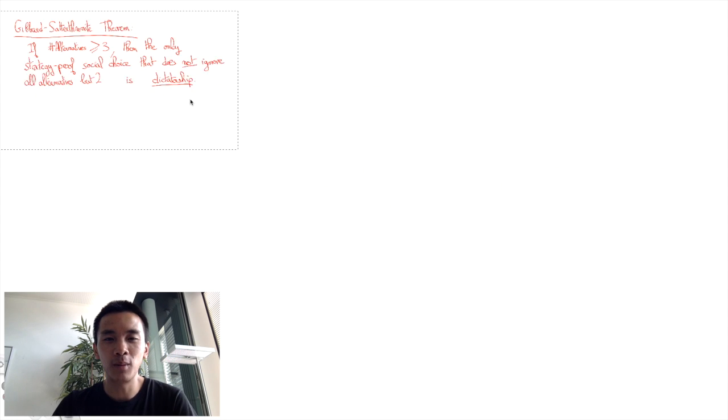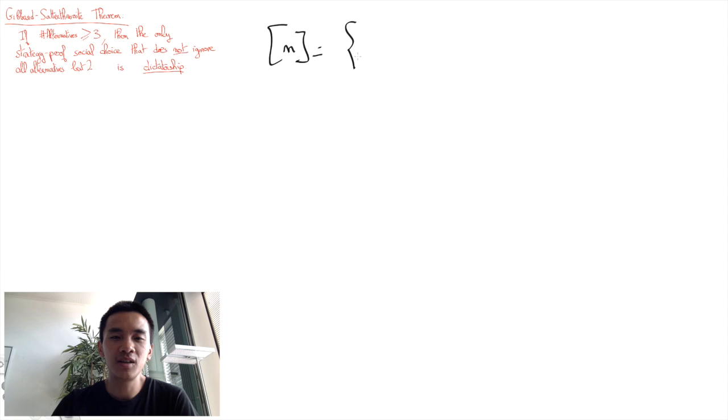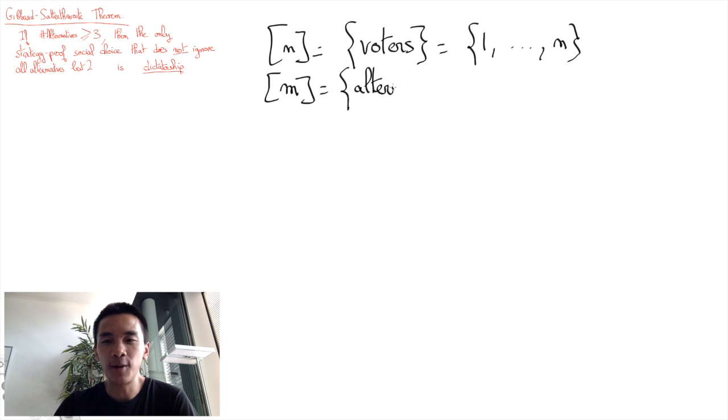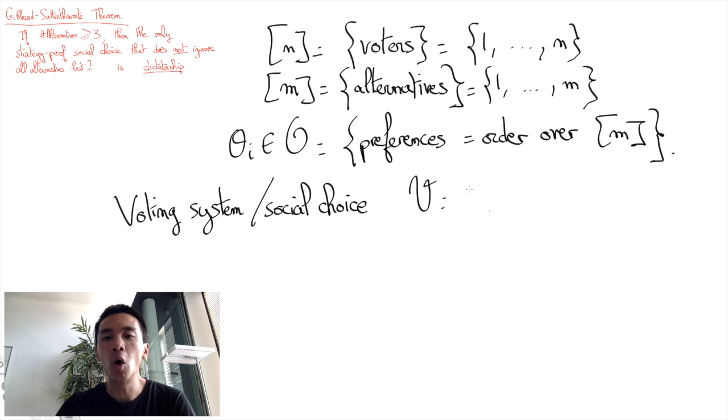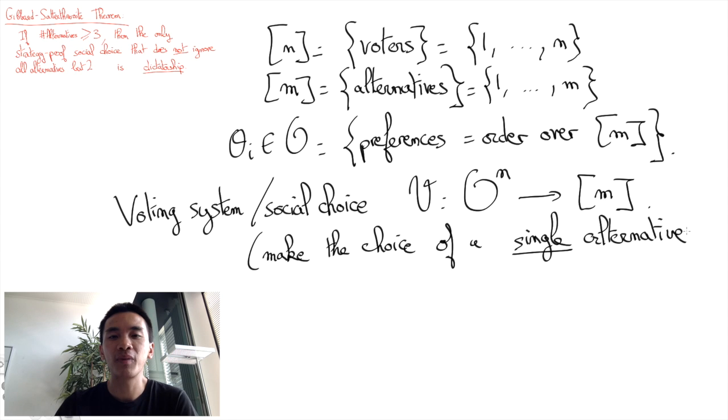What does this all mean more formally? We consider a set N of voters, a set M of alternatives. A voter i's preference theta_i in O is a total order of alternatives. A voting system, or social choice function, is then a function V that goes from O to the power N to M, the set of alternatives. In other words, it elects an alternative out of a preference profile.